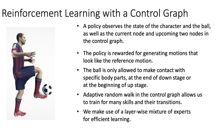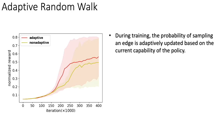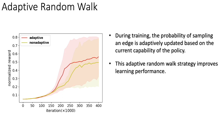We make use of a layer-wise mixture of experts for efficient learning. During training, the probability of sampling an edge is adaptively updated based on the current capability of the policy. This adaptive random walk strategy improves learning performance.